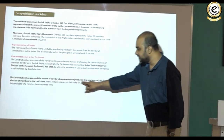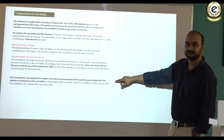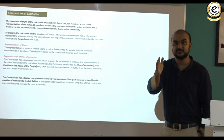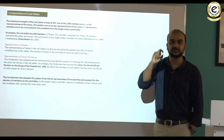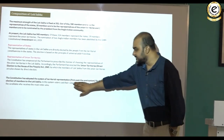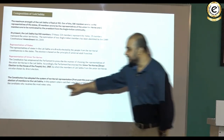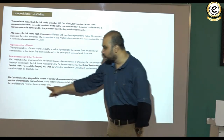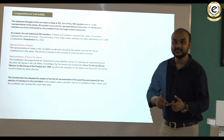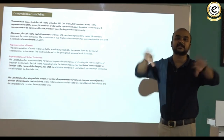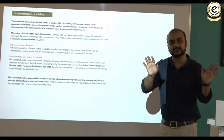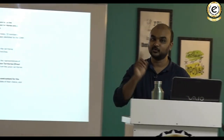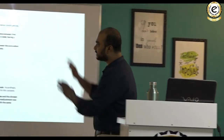The constitution adopted the system of territorial representation with the first-past-the-post system for Lok Sabha elections. The state or union territory is divided into territorial or geographical constituencies. In this system, voters cast their vote for a candidate of their choice, and the candidate who receives the most votes wins — it is not necessary to secure a majority of total votes cast, just the maximum number of votes among candidates.